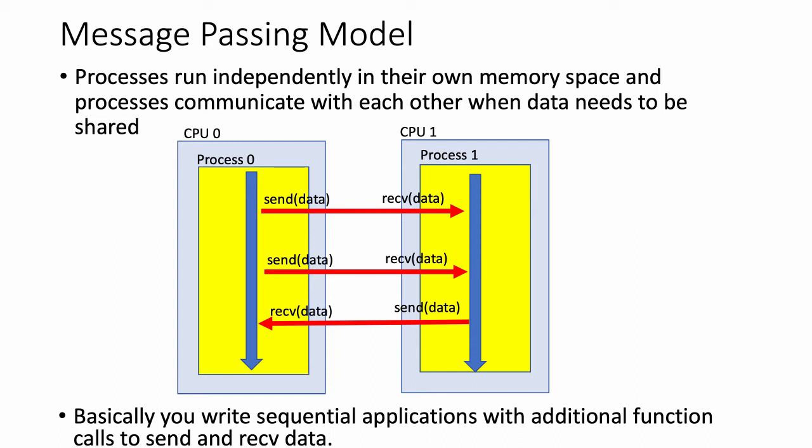So basically, all we are doing is we're writing sequential applications, and then we have additional function calls to send and receive data between processes. It's a basic sequential C code with some send and receive function calls.